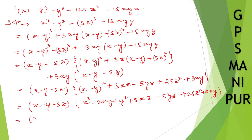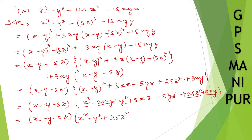Now let us write down the final answer: x minus y minus 5z, times x square plus y square plus 25z square, plus xy — since minus 2xy plus 3xy gives plus xy — minus 5yz plus 5xz. This is your answer. Thank you so much, we will meet in the next video.